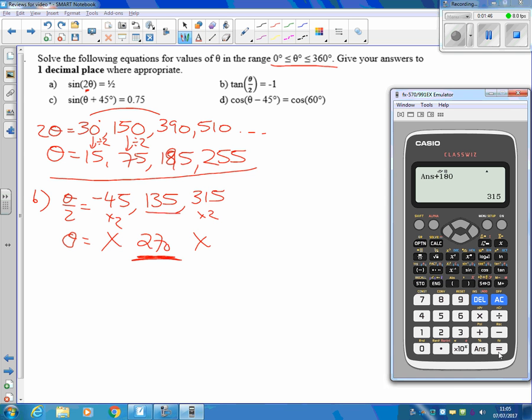On the third one here, we're going to do an inverse sine of the 0.75. Inverse sine of 0.75 gives me that theta plus 45 is equal to, what's that, 48.6.